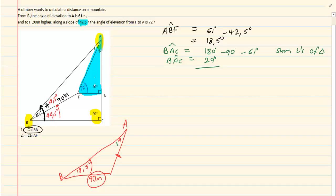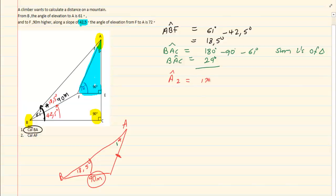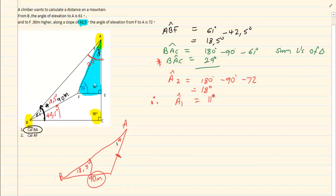Remember, angles of a triangle are very handy — you must fill them in wherever you can. Now A2 is going to equal 180 degrees minus 90 minus 72, which equals 18 degrees. If the entire angle BAC is 29 degrees, and A2 is 18 degrees, then A1 is going to equal 11 degrees. So in this triangle we constructed, A1 equals 11 degrees.